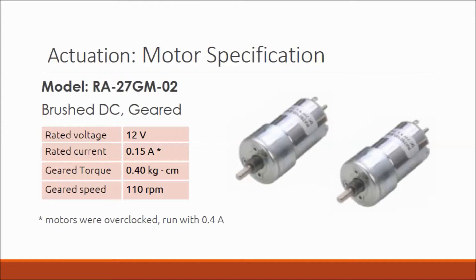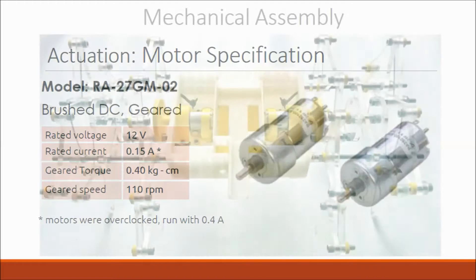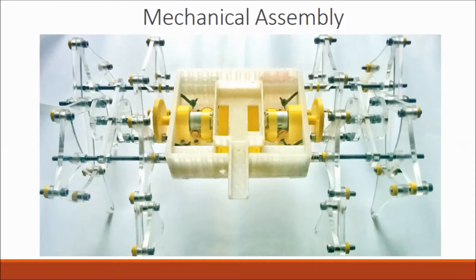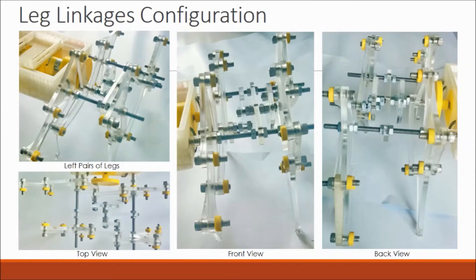Two-brush DC motors were used to power the legs. They were rated for 12 volts and were overdriven with 0.4 amps. The completed mechanical assembly is shown. Note that the legs are pivoted and stubborn on a threaded rod. The outer pair of legs are 180 degrees out of phase with the inner pairs. There are different ways to layer up the linkages. Note that the left and right pairs are mirror reflections of each other.